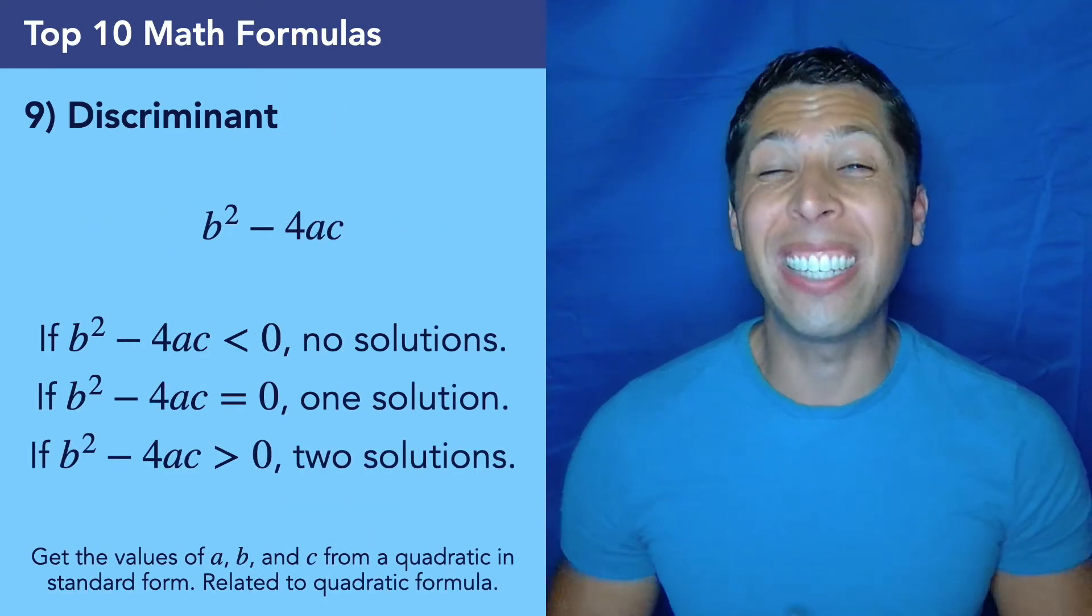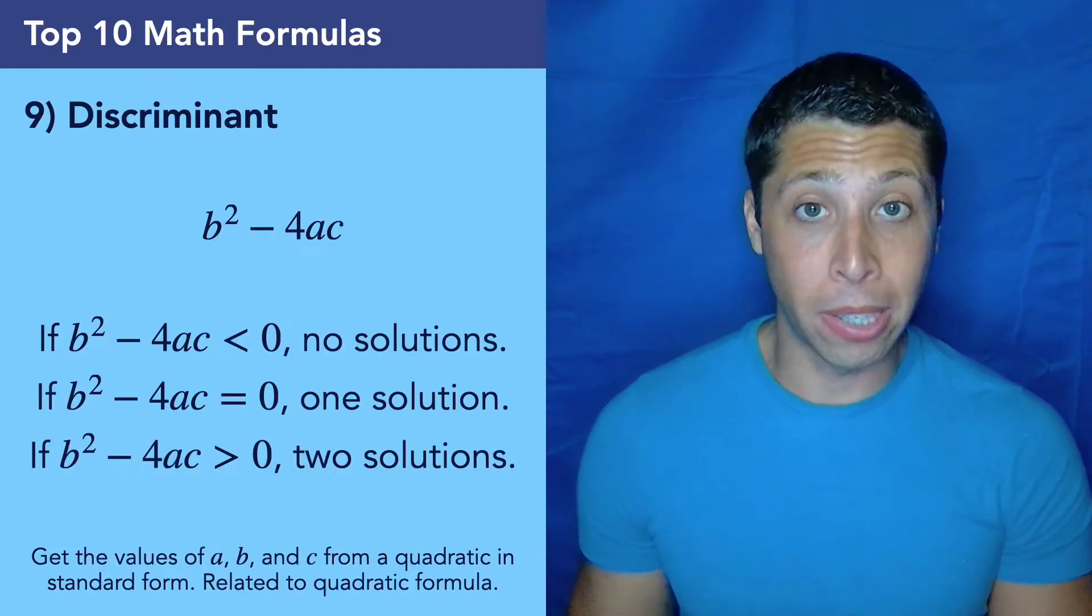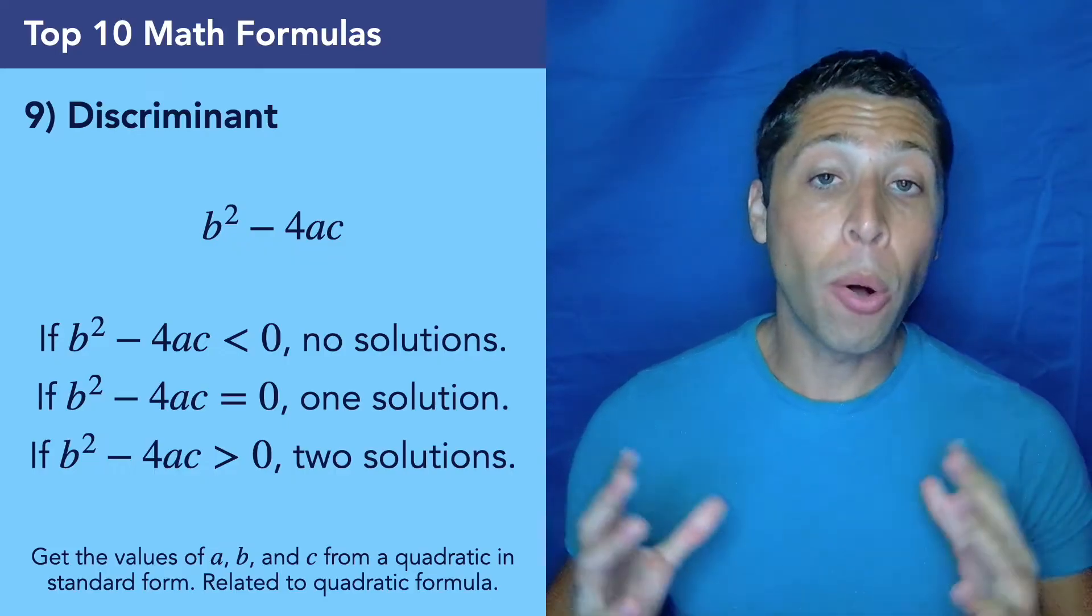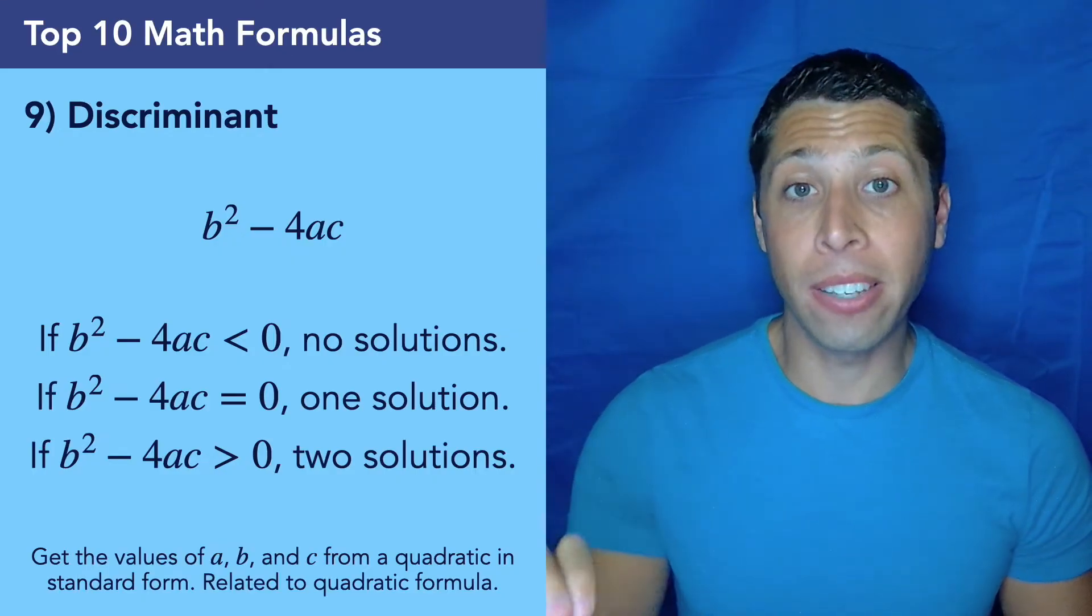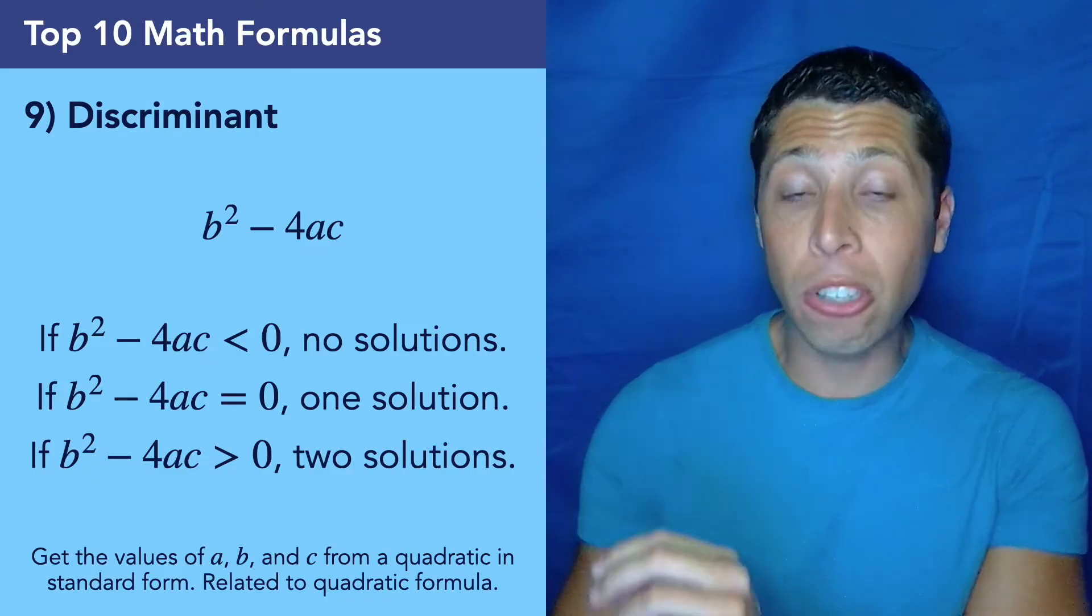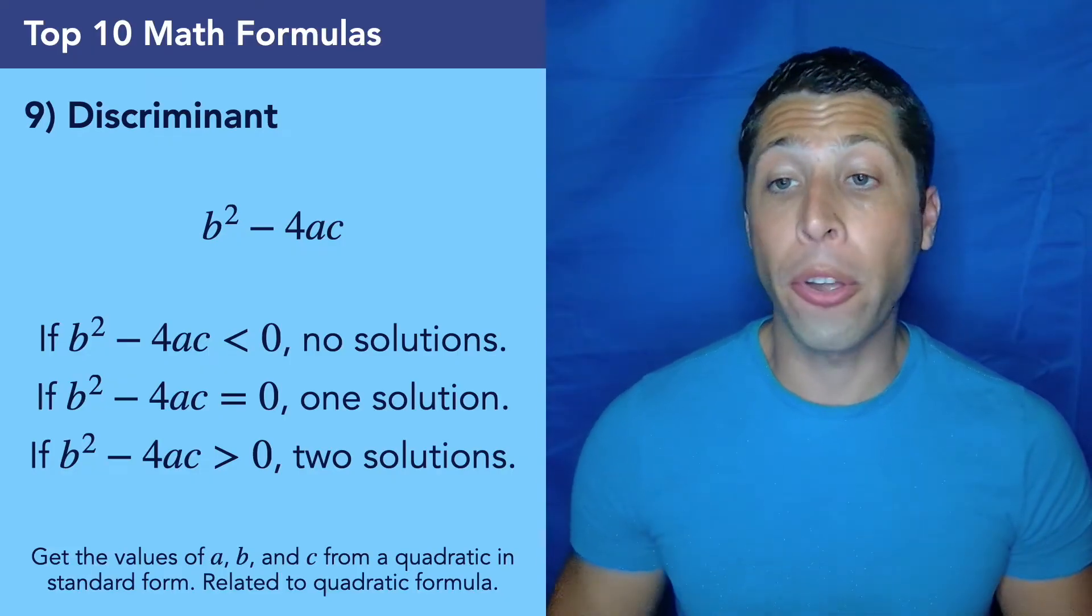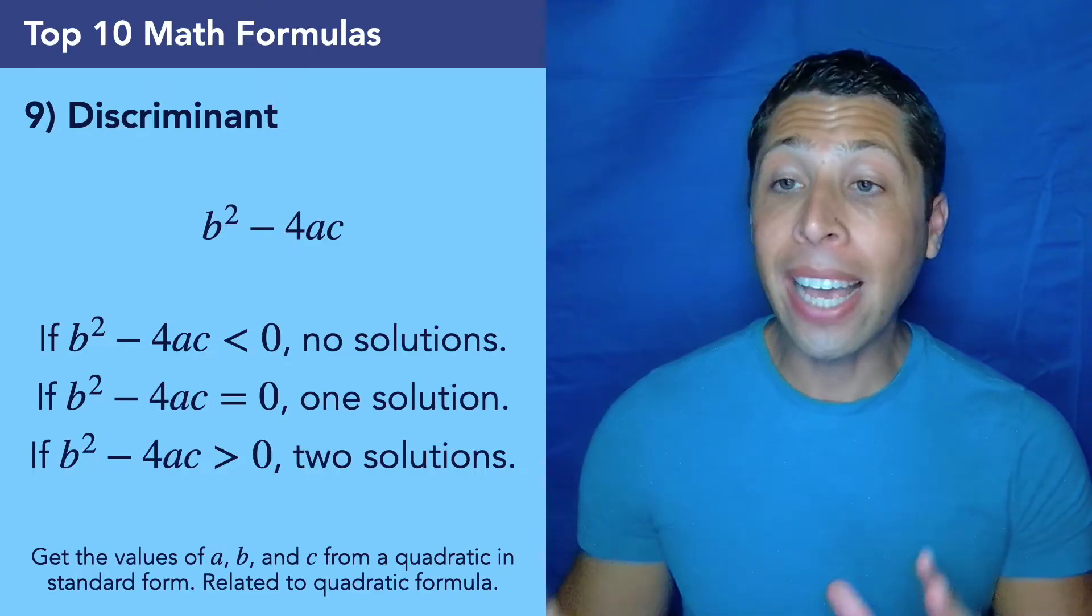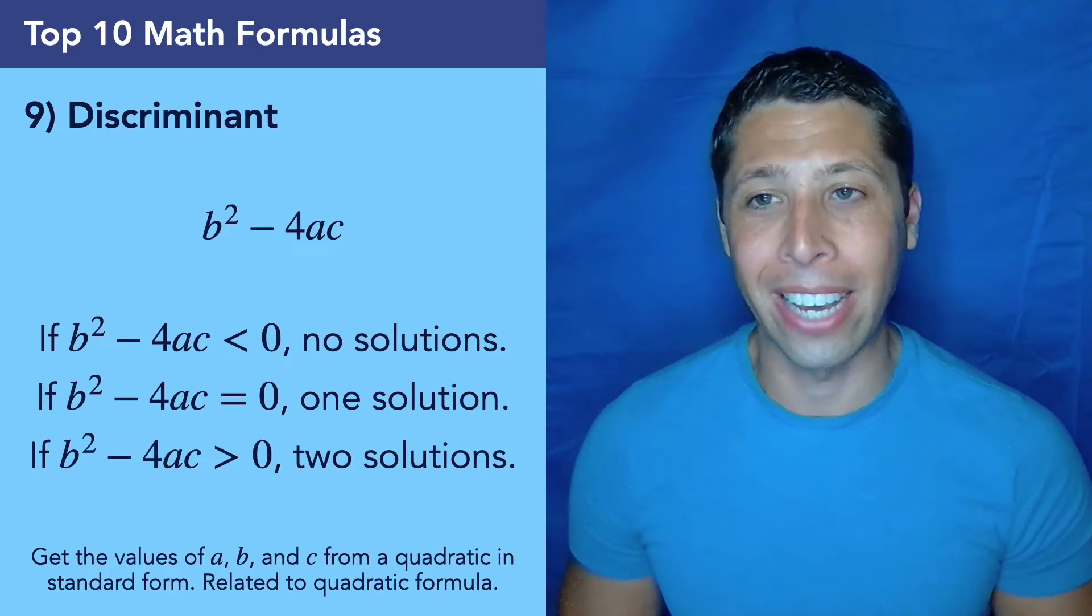Let's contrast that with number nine, which is the discriminant. This is a formula that is part of the quadratic formula. It's the part under the radical, b squared minus 4ac. And while quadratic formula tells us the solutions to any quadratic equation, this formula tells us the number of solutions. It's a bit of a shortcut. It doesn't tell us the specifics of the solutions, but based on whether it is less than, equal to, or greater than zero, we can know whether there are no, one, or two solutions to that equation. And we get the A, B, and C from the standard form of a parabola, which we will talk about later.